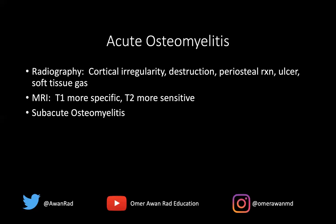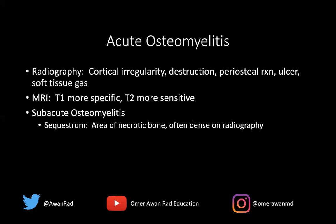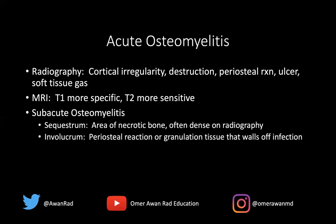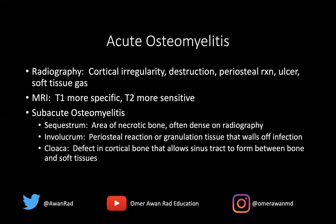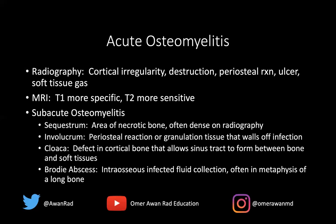In subacute osteomyelitis, there are certain entities and buzzwords everyone should know. A sequestrum is an area of necrotic bone, often dense on radiography. The involucrum is the periosteal reaction or granulation tissue that walls off the infection, seen on radiography and CT. A cloaca is a cortical defect in the bone that can result in a sinus tract, as pus and infectious material exudes out into the soft tissues and to the skin surface. A Brodie's abscess is an intraosseous abscess — an infected fluid collection that often occurs in the metaphysis of a long bone, presenting with T2 bright signal and peripheral rim enhancement on contrast MRI.